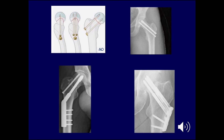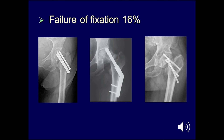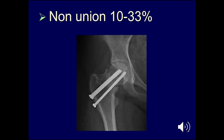This slide shows the typical orientation of a properly placed three-screw parallel fracture fixation, as well as the compression device with an anti-rotation screw, or alternatively the recently developed plate-screw fixation device. However, internal fixation carries significant complications: avascular necrosis in up to 33% in some studies, highly dependent on fracture grade and duration from injury to fixation. Fixation failure averages around 16%, and non-union occurs in up to 33% in some studies.